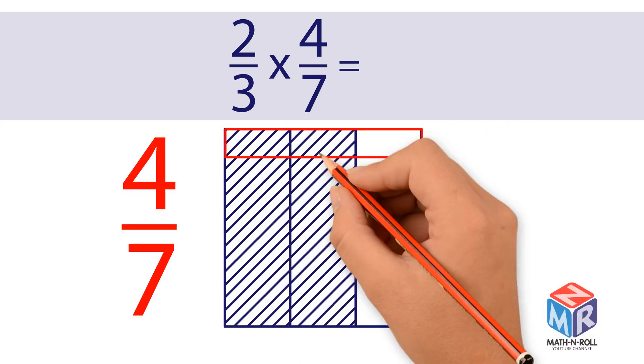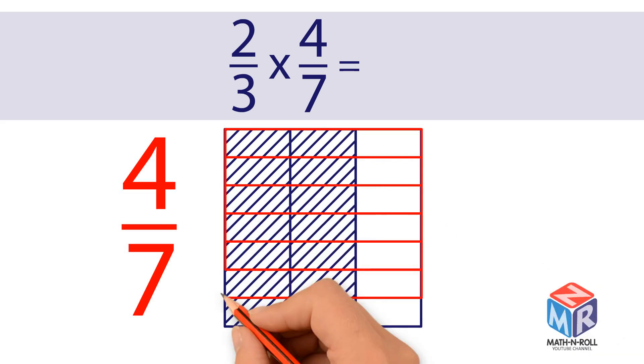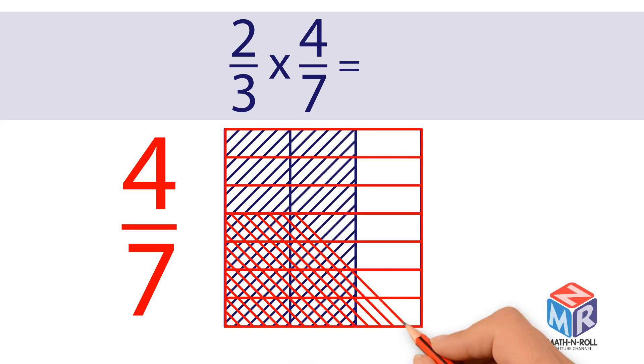4 over 7. The second model has seven rows. 4 out of 7 rows are shaded. The shaded rows represent the fraction 4 7ths.